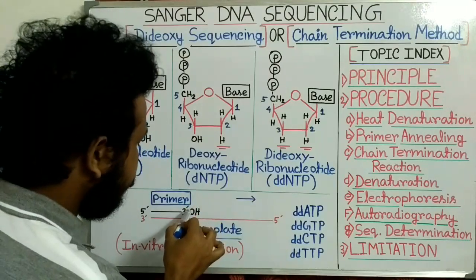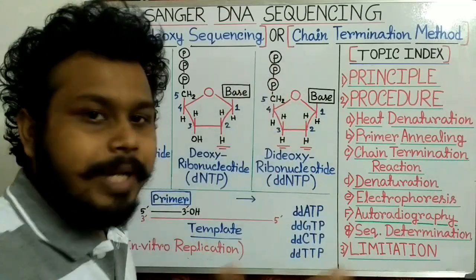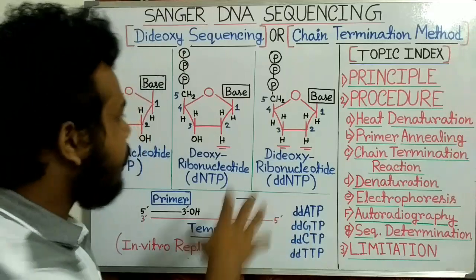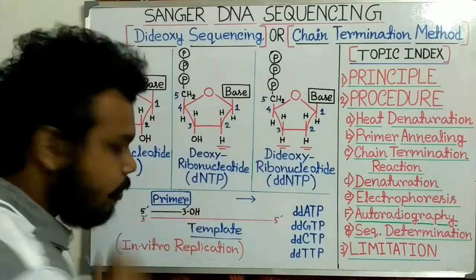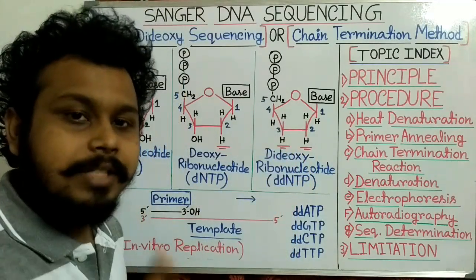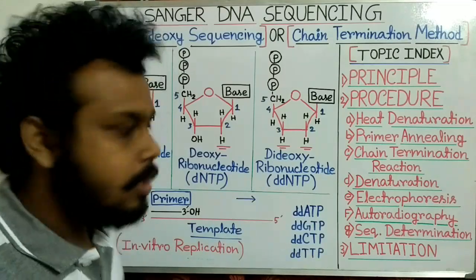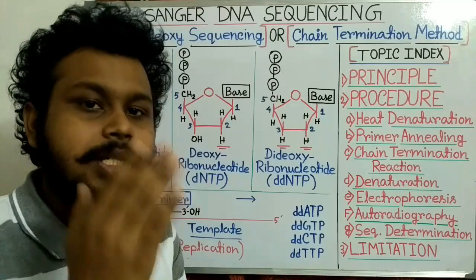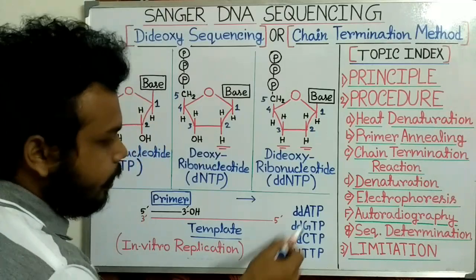When a Dideoxyribonucleotide comes, it also forms a phosphodiester bond — the two phosphate groups are removed as pyrophosphate and a bond forms between the 3' OH and 5' phosphate, same as with normal nucleotides. However, after the addition of this Dideoxyribonucleotide, no further nucleotides can be attached because it lacks the 3' OH group. Since DNA polymerase requires a 3' OH group, no bond formation occurs and the chain is terminated.